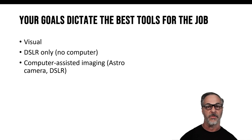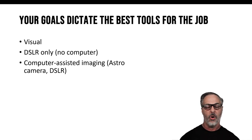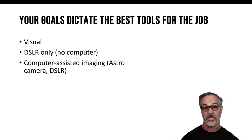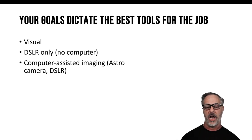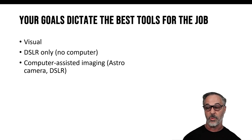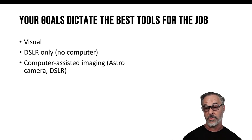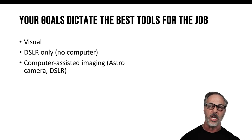The way you do simple camera imaging is a little bit different from what I describe as computer-assisted imaging, where you have a dedicated astronomy camera or astro camera — though you can do this with a DSLR or mirrorless camera too. In this case, we actually have a computer involved, and the computer is a real game changer in terms of how you set up and do things, and being able to take advantage of what computers do better than we could on our own.